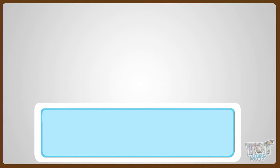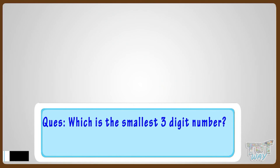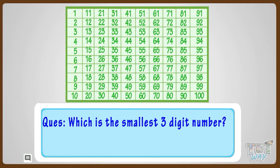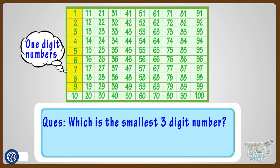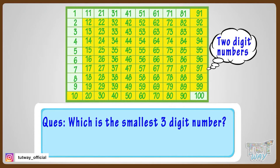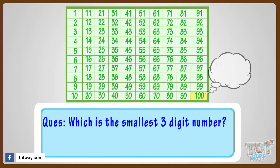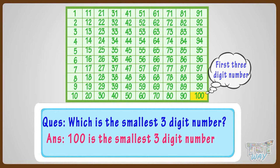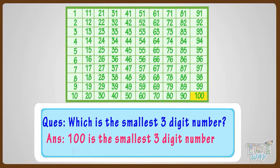Now, which is the smallest three-digit number? Let's find it out. Have a look — from 1 to 9 we have one-digit numbers, 10 to 99 we have two-digit numbers, and from 100 the three-digit numbers start. Hence, 100 is the smallest three-digit number, as it is the first three-digit number.